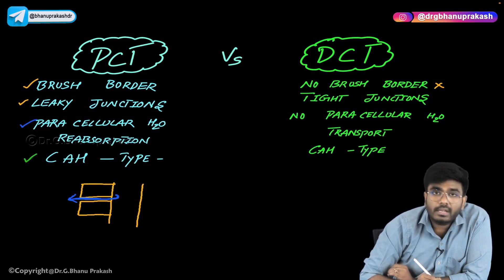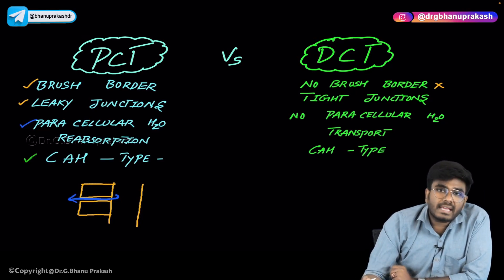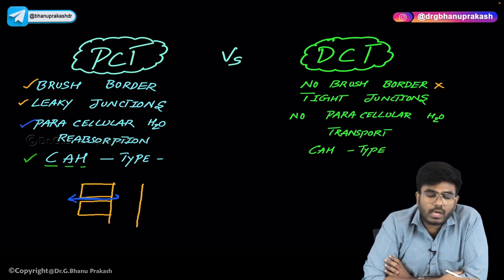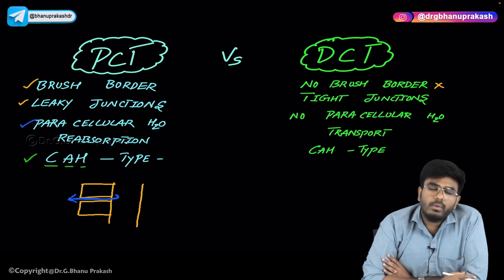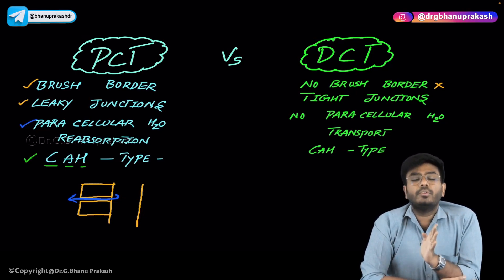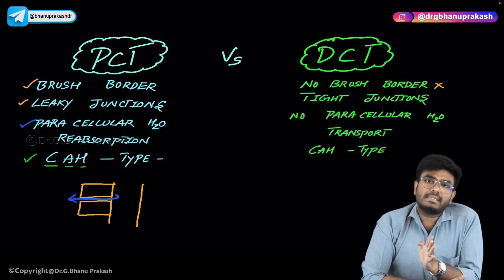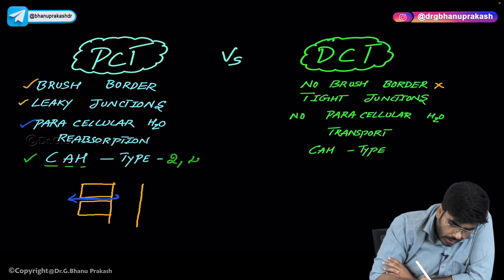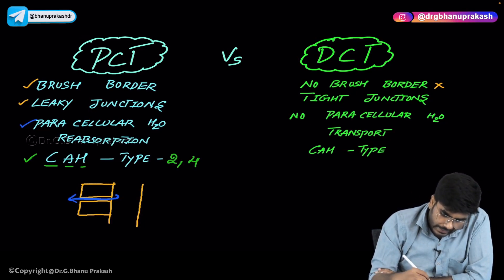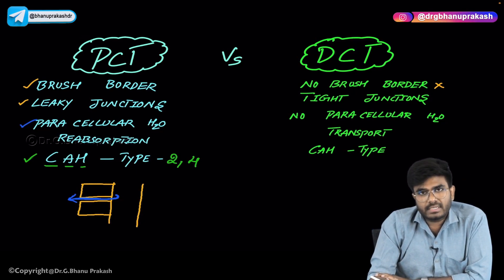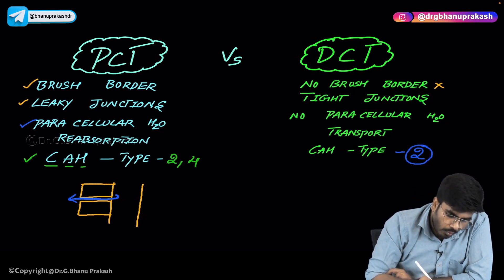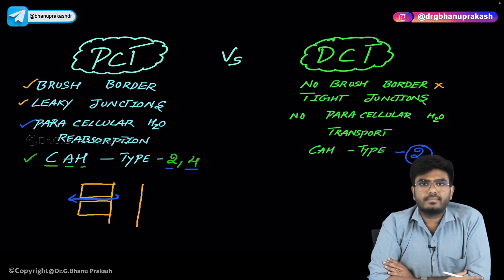In the lumen of the proximal convoluted tubule, there is an enzyme called carbonic anhydrase — we will discuss its function in detail at the end of this chapter. Carbonic anhydrase type 2 and type 4 are both present in the PCT. In the DCT, only type 2 carbonic anhydrase is present. Those are all the important points regarding the distal convoluted tubule.